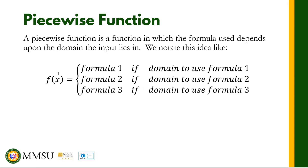We notate this idea using a curly brace. So f of x is equal to — this may contain two or more formulas depending on the domain of the input. We can have formula 1, formula 2, formula 3, or more. Then we have the word 'if' followed by the domain for each formula — formula 1 for one domain, formula 2 for another domain, and so on.